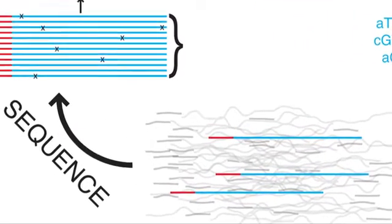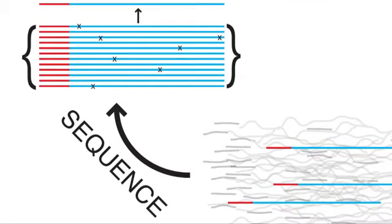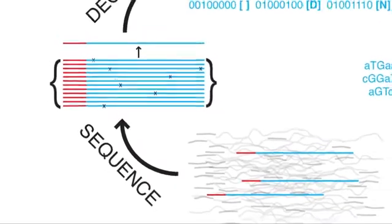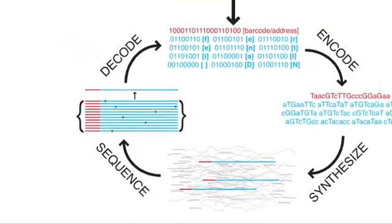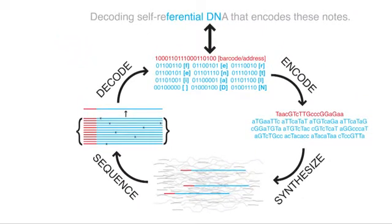When we sequence, we sequence the whole thing and get many copies of each particular barcode sequence. We were able to reconstruct the message, going back the same way we encoded it — decoding the message back to ones and zeros and then back to text. Because we have the address, we know where it goes back. Once we sequence everything, we're able to reconstruct the original digital information that was encoded.